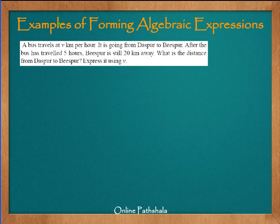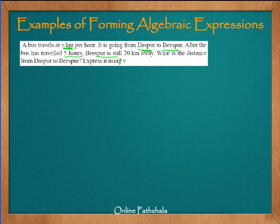Now we will look at another problem. This problem says that a bus is travelling at V kilometers per hour, so the bus covers V kilometers every hour. It is going from a place called Daspur to Bispur. After the bus has travelled for 5 hours, it wants to reach Bispur but is still 20 kilometers away. What is the distance from Daspur to Bispur? Express it using V.